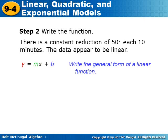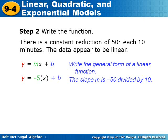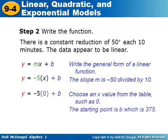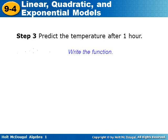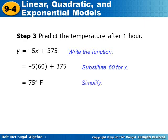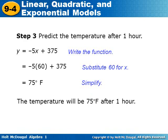Write the general form of a linear function: y = mx + b. The slope m is −50 divided by 10, which equals −5. Plug −5 in for m. Then choose x = 0 from the table to find the y-intercept b — when x = 0, y = 375, so b = 375. The function is y = −5x + 375. To predict the temperature after one hour, substitute x = 60 (60 minutes) and simplify: the result is 75 degrees Fahrenheit. So the temperature will be 75 degrees after one hour.